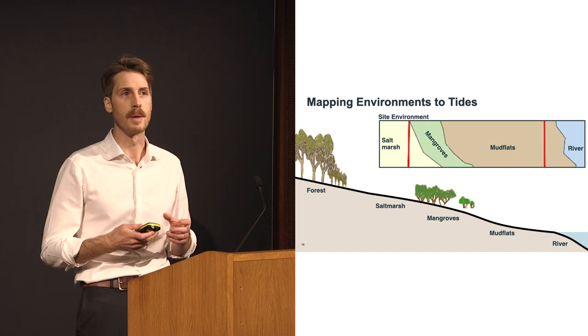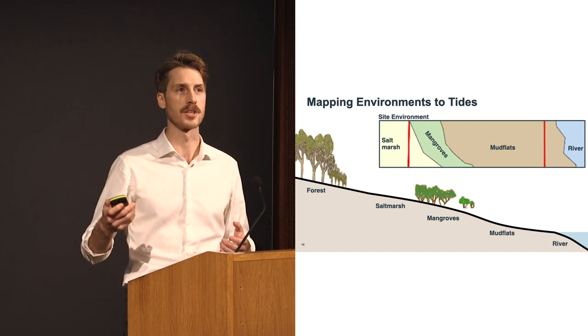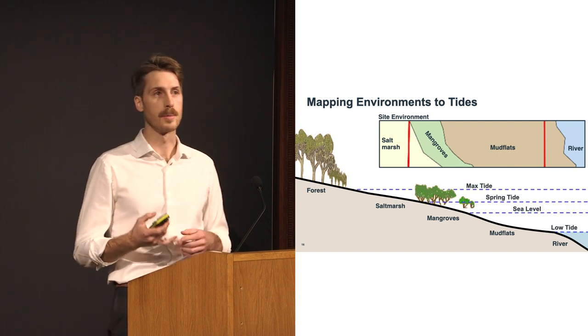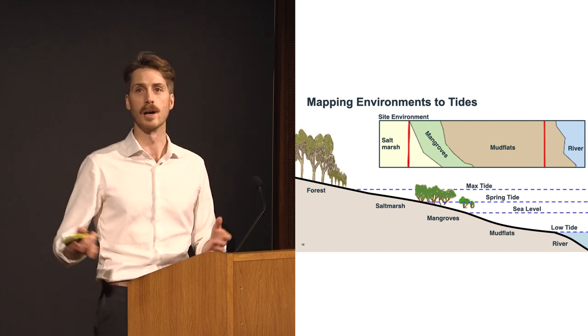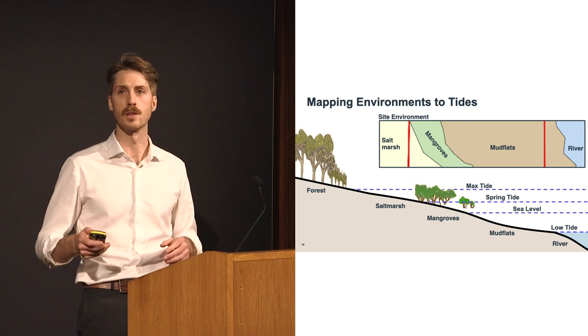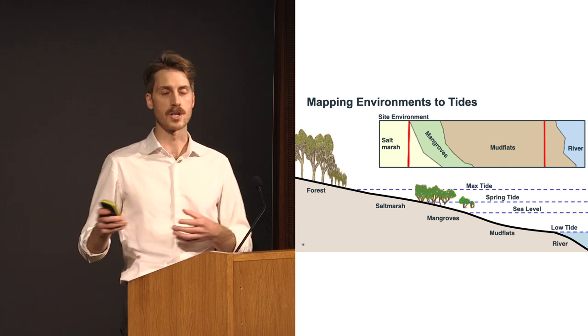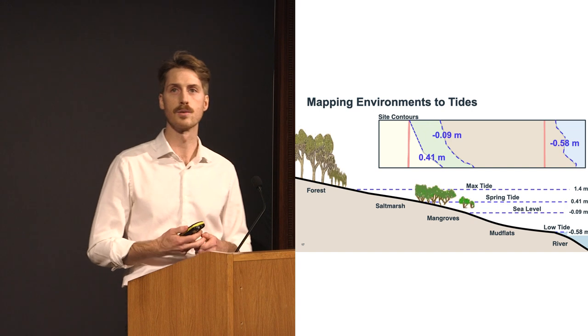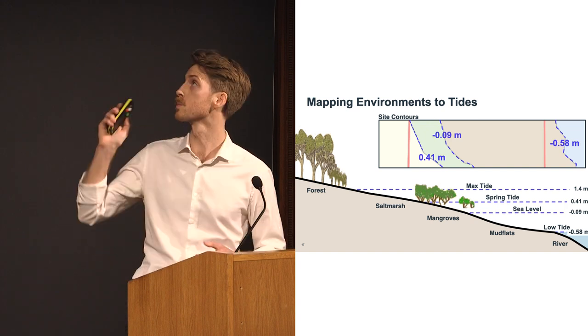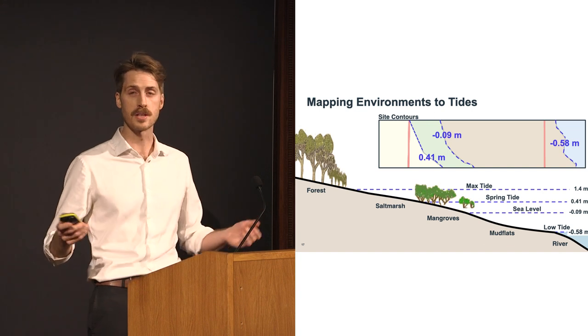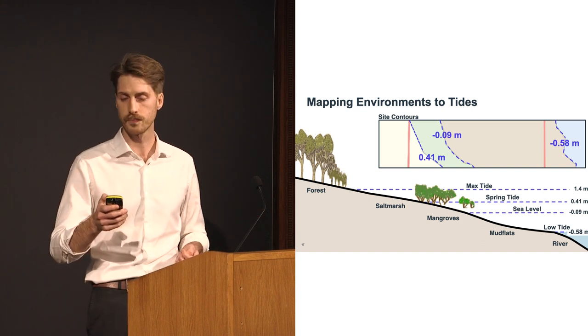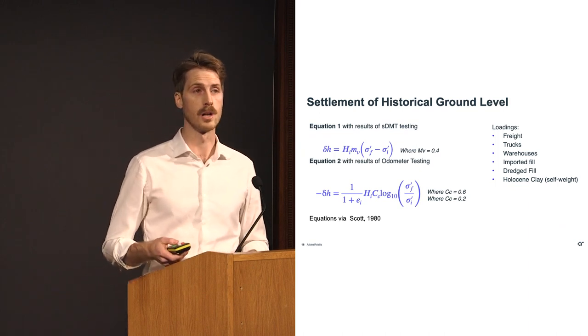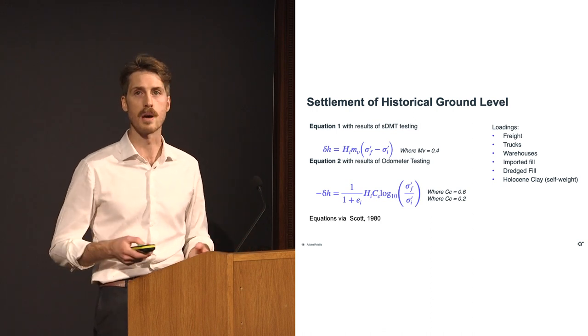Where's our point of commonality between our conceptual model, our understanding and our site in four dimensions? For me, for this project, it was environments. The mangroves. These will typically only grow in a particular tidal range between spring tide and sea level. You'll have mudflats below sea level and river will be mapped below tide level. So, we can correlate these environments back to tidal levels. We can go back and research the historical tidal levels within the Sydney Harbour, adjust them for sea level rise and some changes in datums. And with broad strokes, we can draw contours across our site. We've reconstructed the pre-reclamation ground surface.